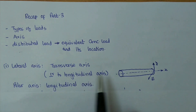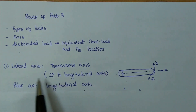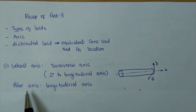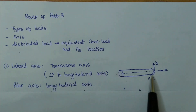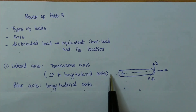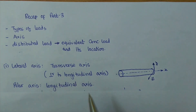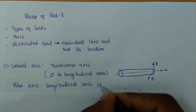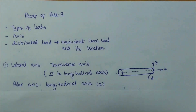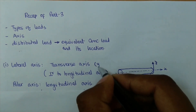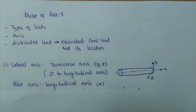Some people call it the lateral axis. There is nothing to worry about that. There is also a polar axis, and the polar axis is similar to the longitudinal axis. If I have a shaft or a beam, the axis along its length — the x-axis — represents the longitudinal or polar axis. The other two axes perpendicular to it represent the transverse or lateral axis.